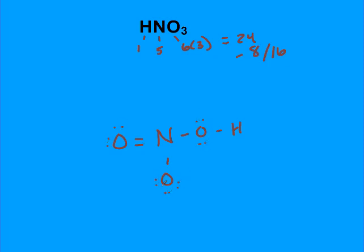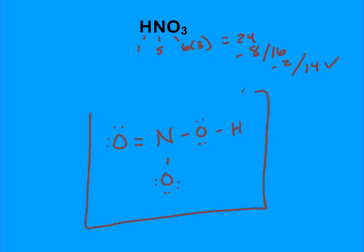So now I've used 2, 4, 6, 8, 10, 12, 14, which with my double bond is my correct structure. You could do formal charge to figure out exactly where that double bond needs to go, but this would be perfectly acceptable.